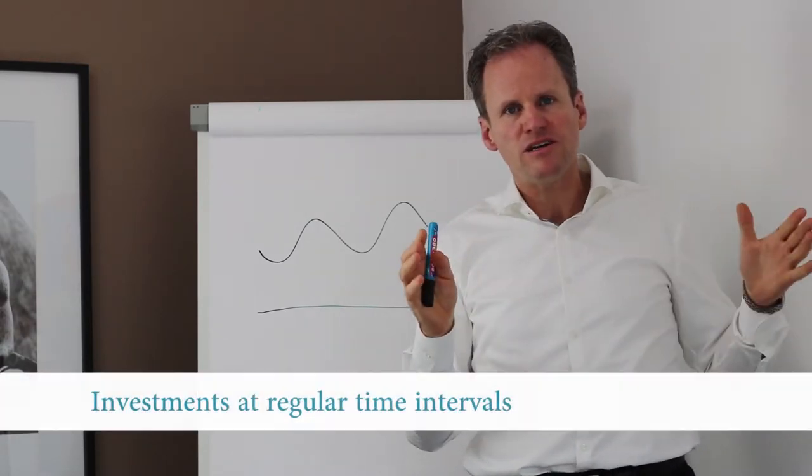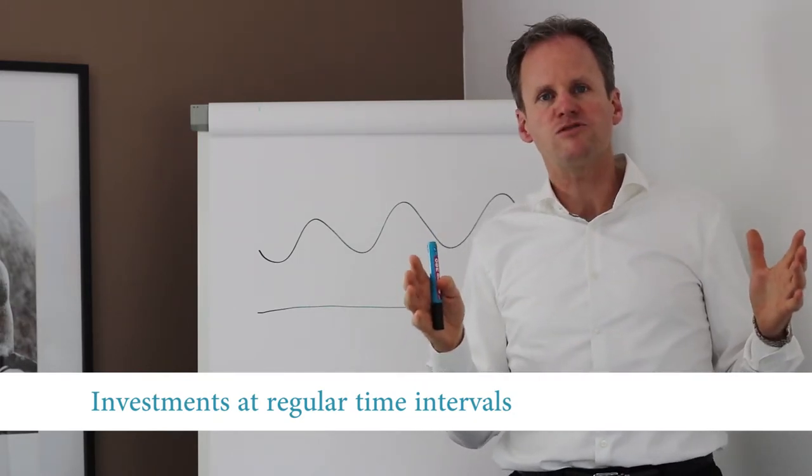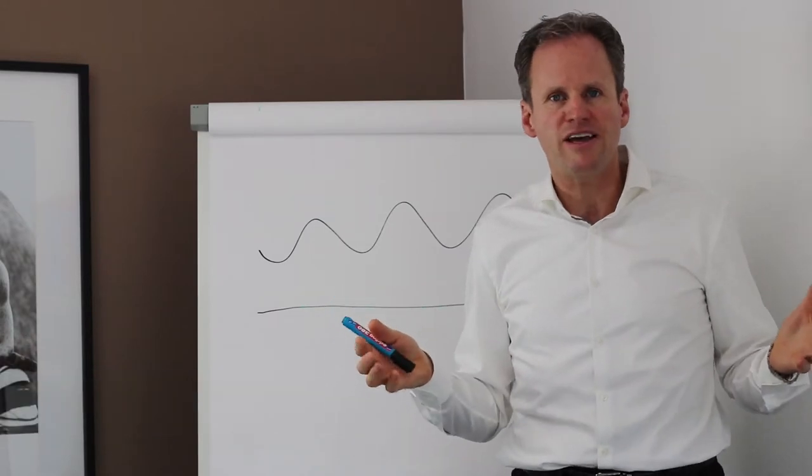You spread your investment out over time. You don't invest the full amount right at the beginning. You split it. So if you invest 20,000 francs a year, you split it in 5,000 francs each quarter.